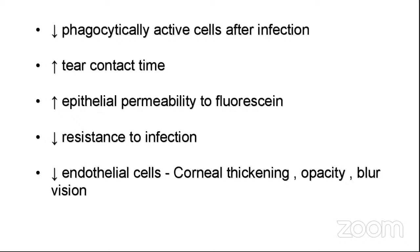There is a decrease in phagocytically active cells after infection — phagocytes help during infection, but their functioning decreases with age. There is an increase in tear contact time as we age. There is also an increase in epithelial permeability to fluorescein — the epithelium becomes more permeable, absorbing more fluorescein pigment. Resistance to infection also decreases. Decreased endothelial cells cause corneal thickening and opacities, which in turn causes blurring of vision.